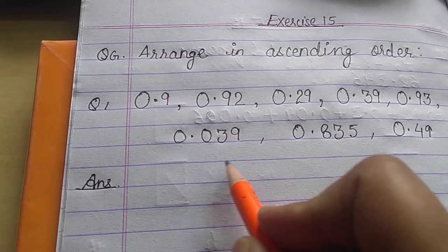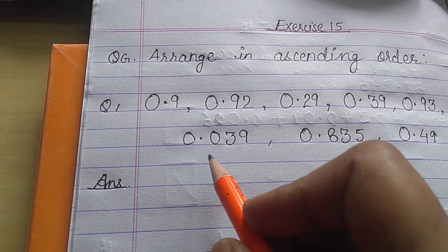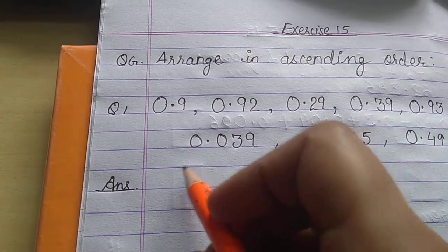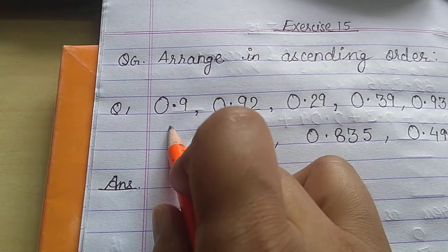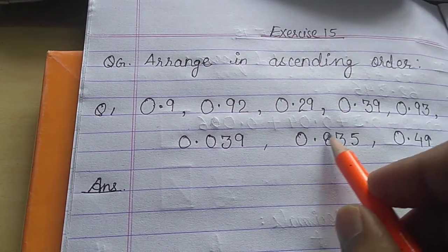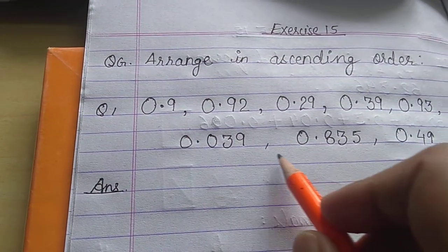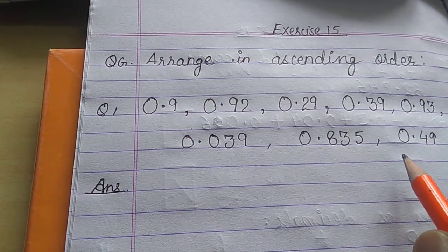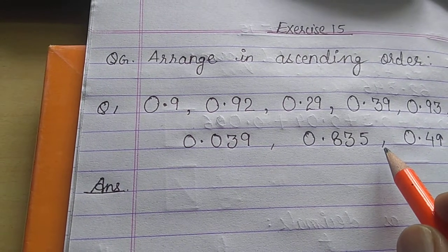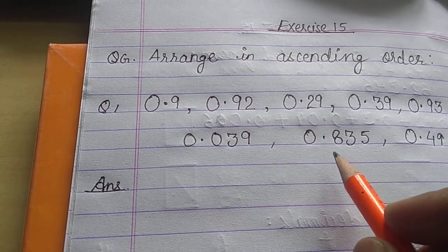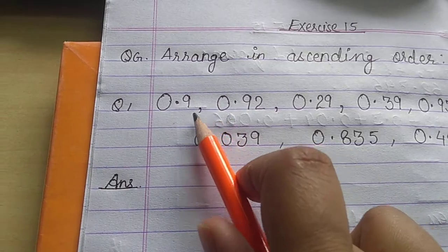So let us find the smallest number. The rule of comparison is first to compare the whole number part. The whole number part in the first number is 0. In all the decimal numbers, you can see the whole number part is 0. So what we will do is compare the next decimal digit.